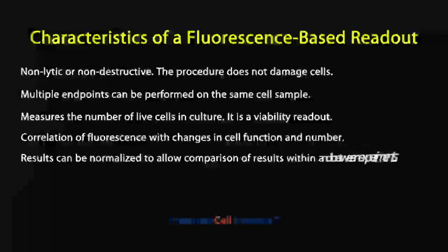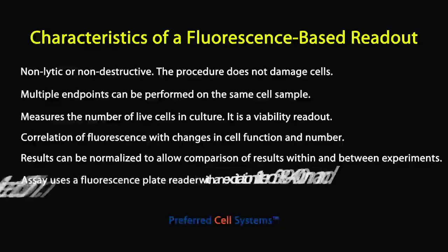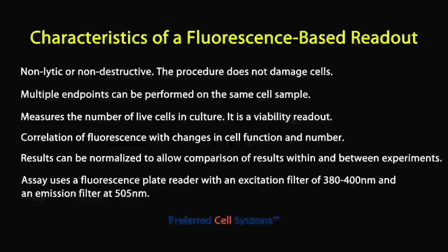The data obtained can be normalized by performing a cell dose response every time an assay is performed. This allows a better comparison between experiments. The assay uses a fluorescence plate reader with an excitation filter of 380–400 nm and an emission filter of 505 nm.